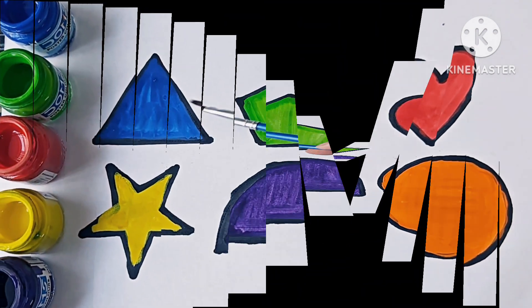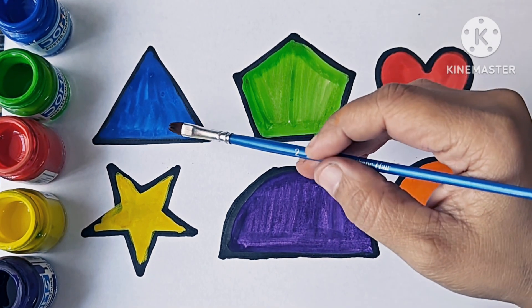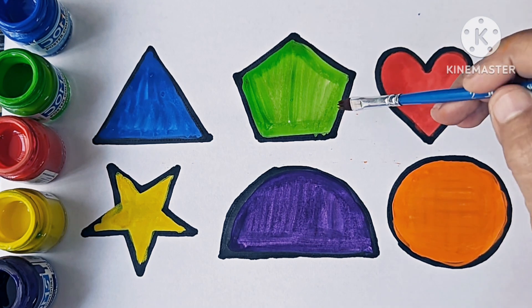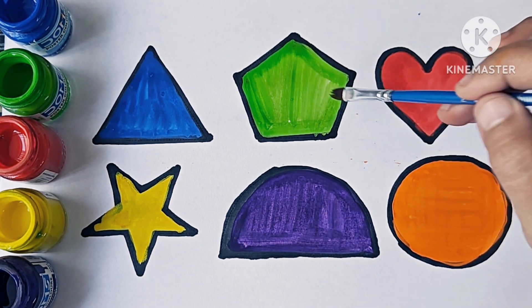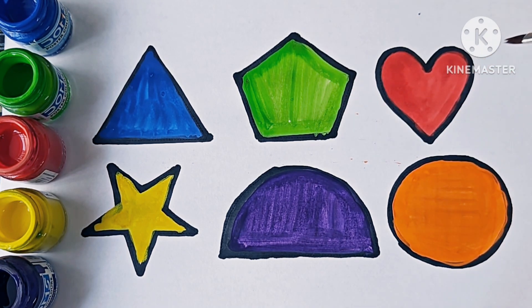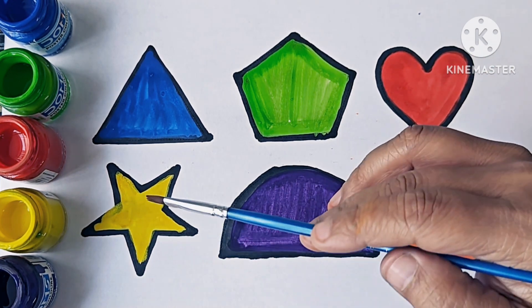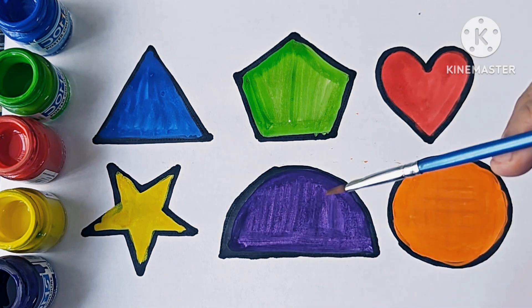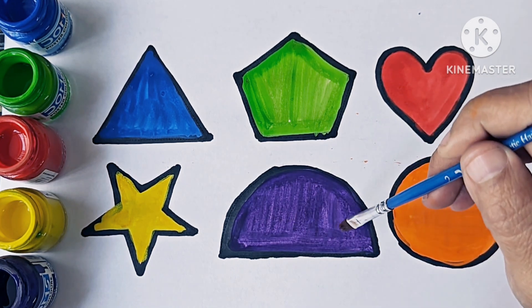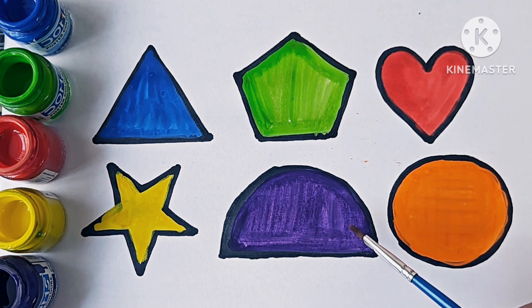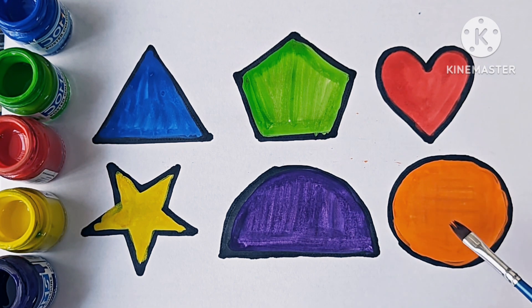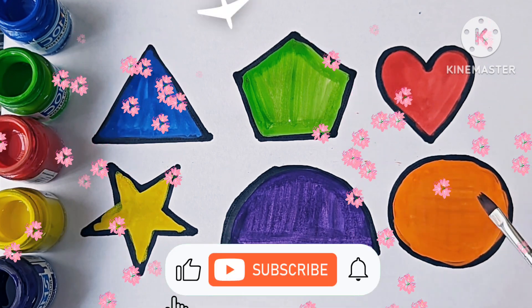Triangle has 3 sides, it is a 2D shape. Pentagon has 5 sides, it is also a 2D shape. Heart is a shape. Star has 5 points, so we call it a 5-pointed star. Semicircle or half circle is a 2D shape. Circle has no sides.